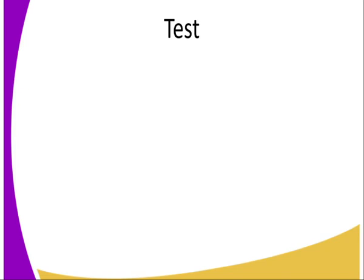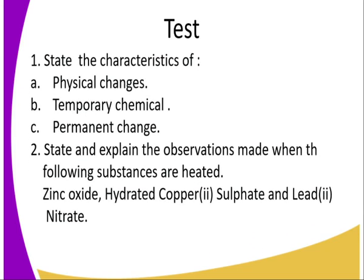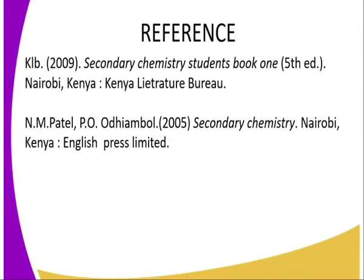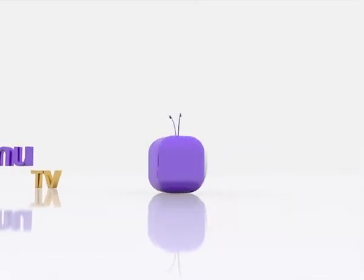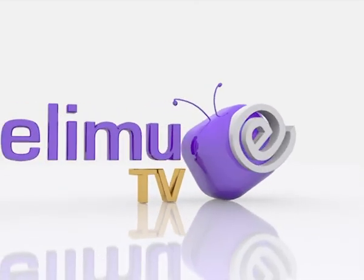Did we get the concept of this lesson? Let's try to answer the following questions. Question one: state the characteristics of physical changes, temporary chemical change, and permanent change. Question two: state and explain the observations made when the following substances are heated — zinc oxide, hydrated copper(II) sulfate, and lead(II) nitrate. You can refer to the Secondary Chemistry Students Book One. You can also reach us at Elimu TV on Twitter, Facebook, and YouTube, or send us a text through the numbers provided. Please do pay attention for more lessons to come.